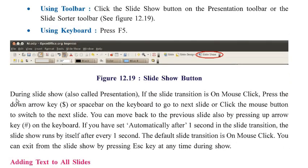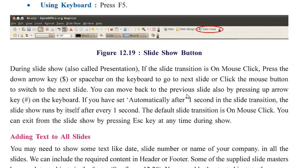During the slide show, if slide transition is set to mouse click, press the Down Arrow key or the Spacebar to go to the next slide. Generally in PowerPoint we give a single click, press Enter, or press the arrow keys to advance. If the transition is set automatically, it moves on its own. To end the slide show at any point, press the Escape key.